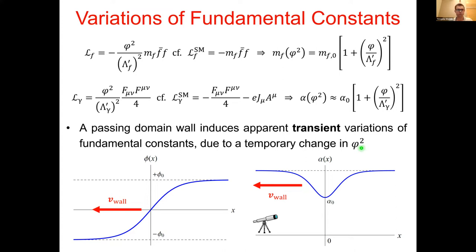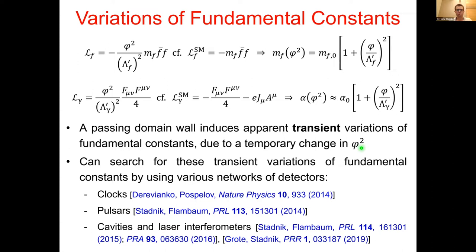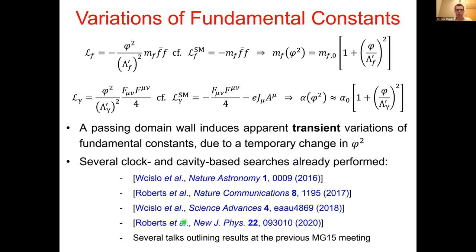An observer would first see one particular value of alpha, then as the wall passes through, a slightly different value, and finally the same value as initially — because the effect depends on an even power of the scalar field phi rather than an odd power. It has been proposed that we can look for these transient variations of physical constants using networks of detectors, including atomic clocks, pulsars as astrophysical clocks, laboratory cavities supplementing atomic clocks, and optical interferometry.